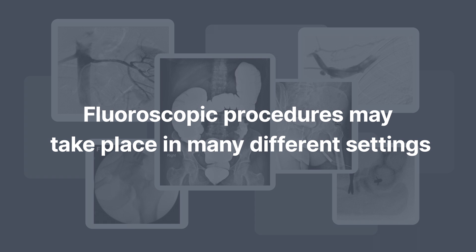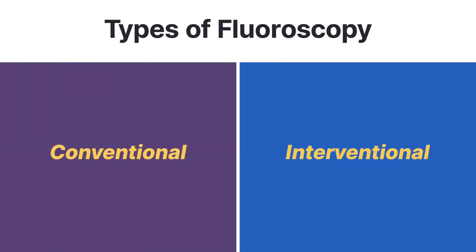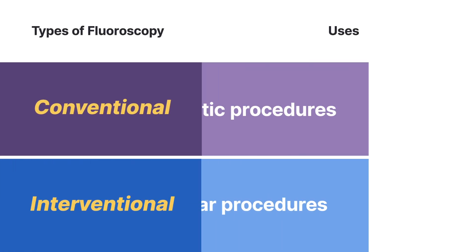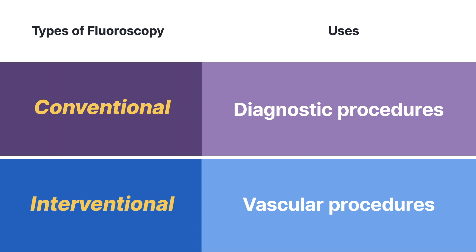All of these procedures can take place in many different settings like hospitals, clinics, ambulatory surgery centers, and private imaging centers. In summary, there are two types of fluoroscopy: conventional and interventional. Conventional fluoroscopy is primarily used for diagnostic purposes. Interventional fluoroscopy is primarily used for vascular procedures. Pediatric fluoroscopy is a subcategory of conventional fluoroscopy used for the care of children. All three types of fluoroscopy are generally associated with different levels of radiation exposure.